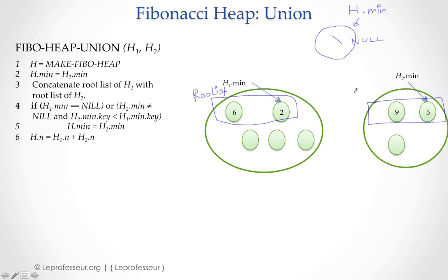So root list of H1 is this one. Root list of H2 has nodes 9 and 5. We are not showing associated pointers, I would just like to mention only the key pointers. When you concatenate you can simply concatenate like that. Usually the structure is circularly linked lists, so now 6 will point to this one. It's a circularly linked list.